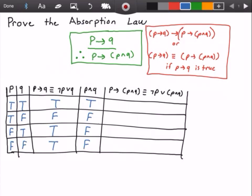Now we're on our last column. And wherever P is false, the statement will be true. So that's the last two rows. And whenever P and Q is true, then the statement will be true. So that's the first row, and then the second row here is false.